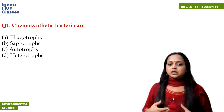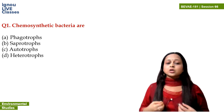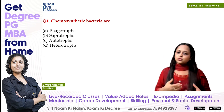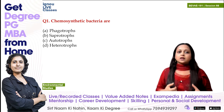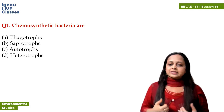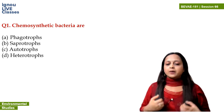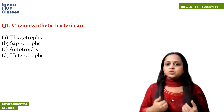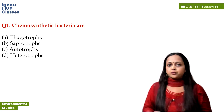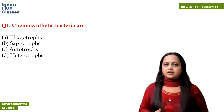Phagotrophs can be microorganisms, bacteria, or fungus. Saprotrophs basically feed on dead and decayed organic matter — those are the saprotrophs. If we talk about autotrophs, autotrophs are organisms that can make their own food. They are different from phagotrophs. So let's discuss what chemosynthetic bacteria are.